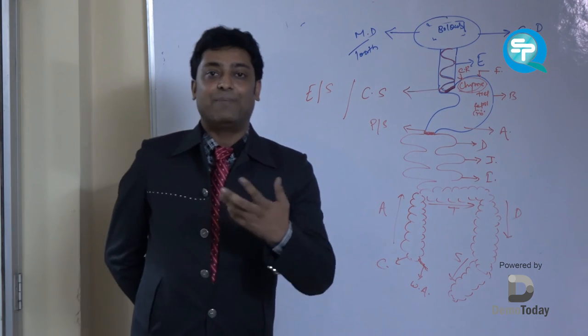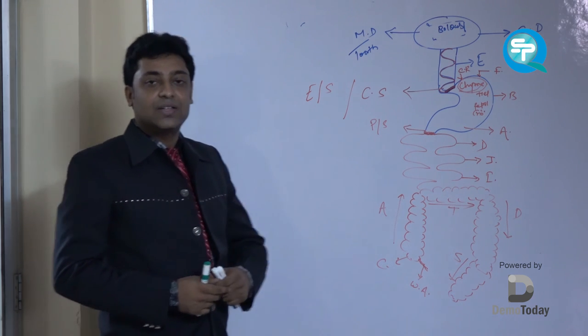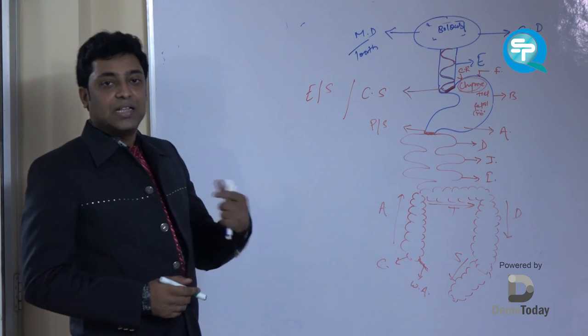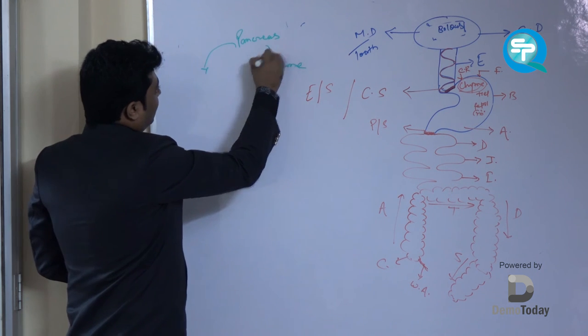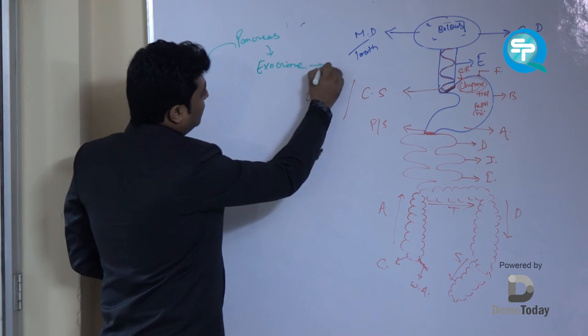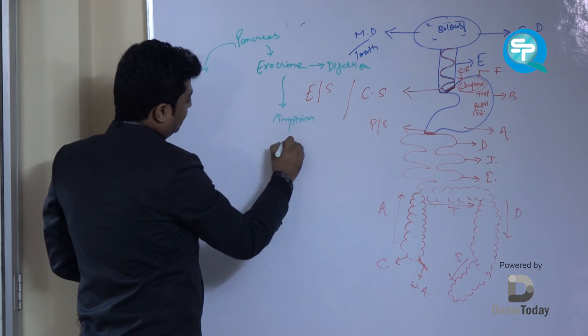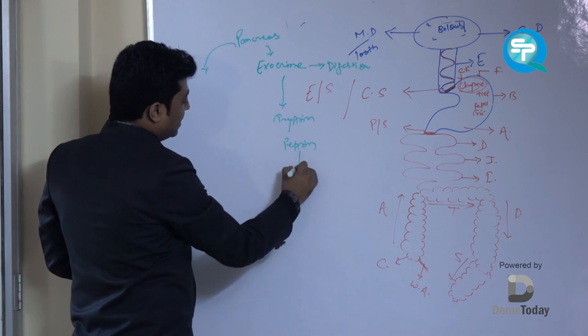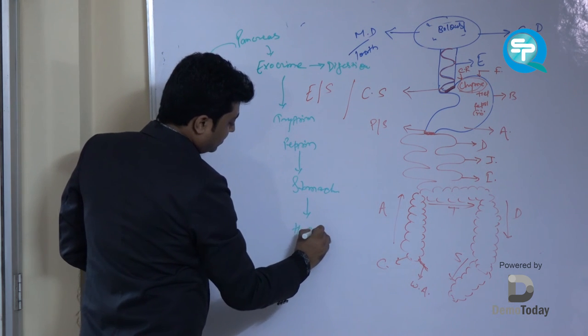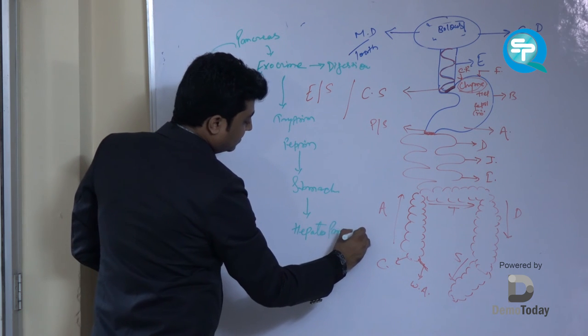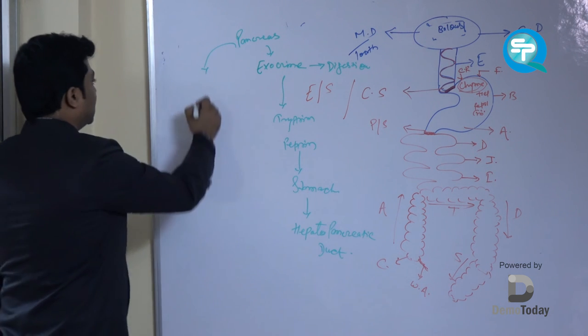And the last one is pancreas. What is pancreas? The pancreas is the single gland which acts both exocrine and endocrine in our body. So it is also known as dual function gland. The exocrine part of pancreas helps in digestion. It secretes trypsin and pepsin, directing into the stomach with the help of hepatopancreatic duct.